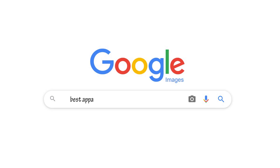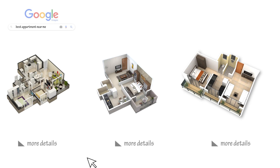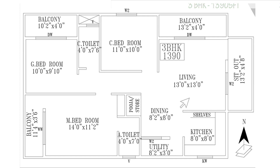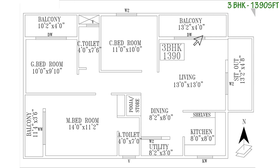For proper clarity, let's take an example of a brochure of an apartment. Skipping all other categories, let's focus on the area statement. As we see on the screen, the plan type of flat is mentioned as 3BHK, and there is an area mentioned above which says it is 1390 square feet.